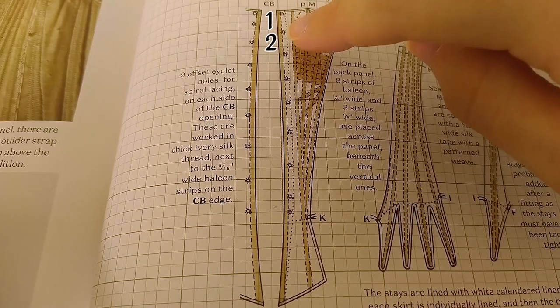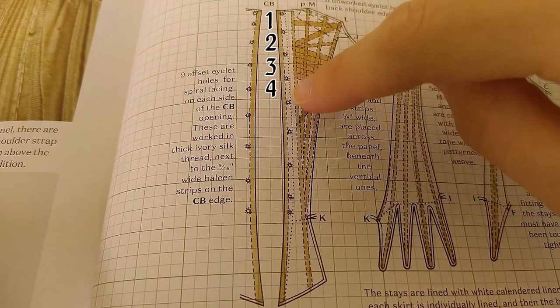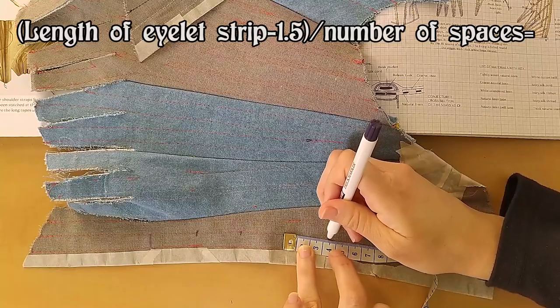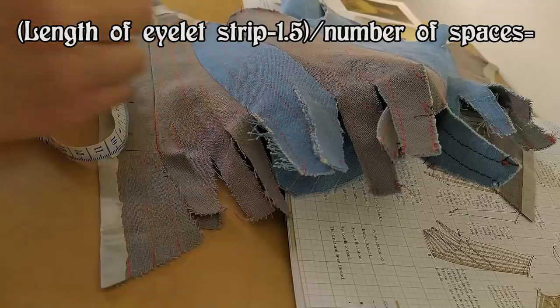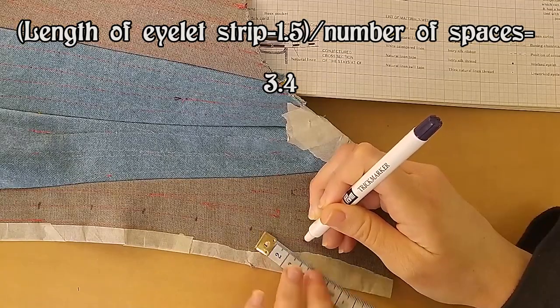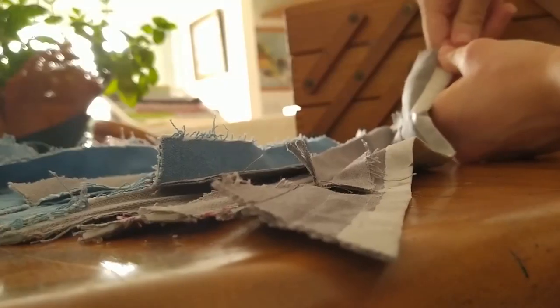In order to figure out the spacing of the rest of the eyelets, I counted the amount of spaces between them, in this case seven, measured the length of my stays between the extra eyelet and the end, and divided that length by the number of spaces. I then measured out eyelets 3.4 centimeters away from each other. And because I couldn't find my awl, I proceeded to bone the stays with zip ties.